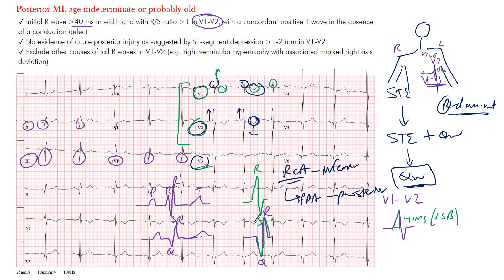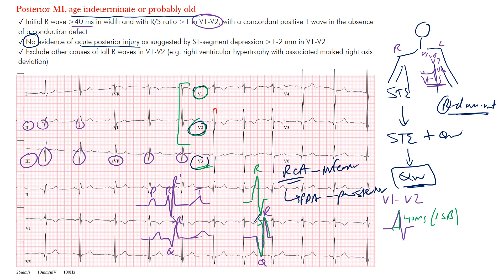One key point: in leads V1 and V2, you do not want to see any ST segment changes when you have an age-indeterminate or probably old posterior MI. No evidence of acute posterior injury — so no ST depression. Notice there's no ST depression in these leads at all. The main things: the initial R wave is wide, and the R-to-S ratio is greater than one.